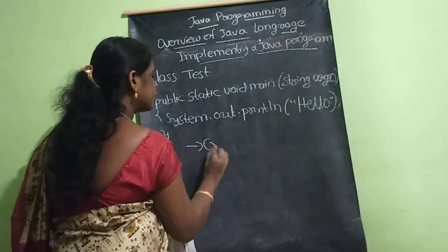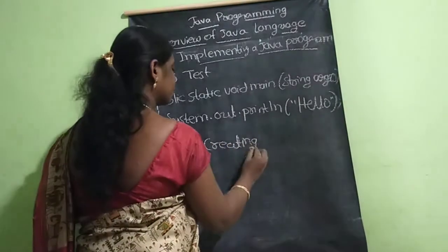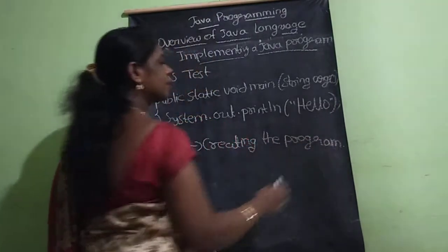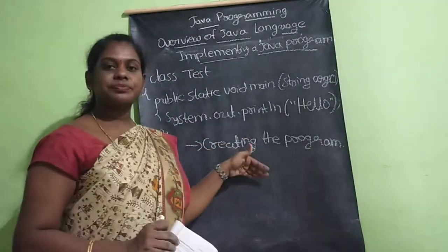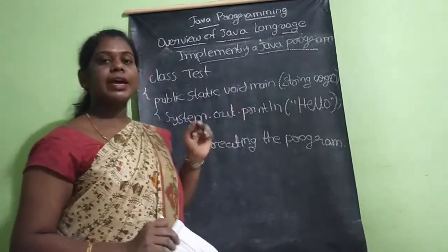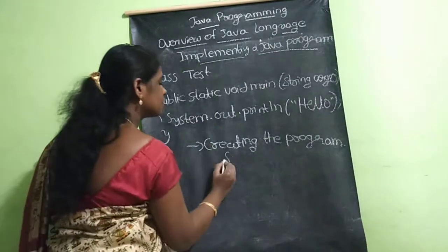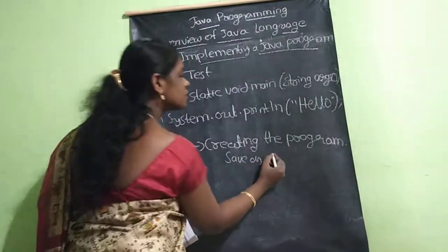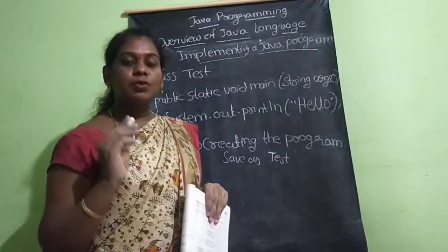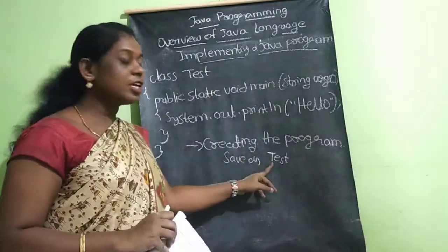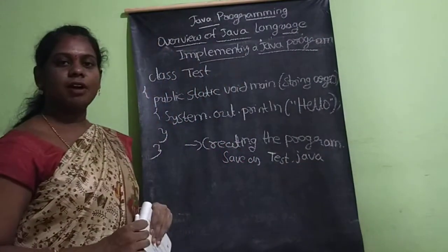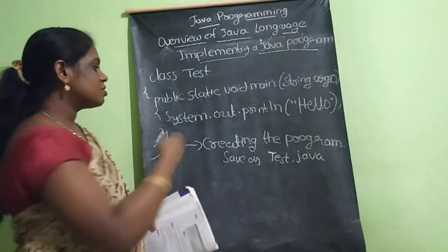First step is creating the program. You type the program in Notepad. You save it using 'Save As' — the file name should be the same as the class name. The class name here is 'Test', and it's case sensitive — T is capital. So save it as Test.java.